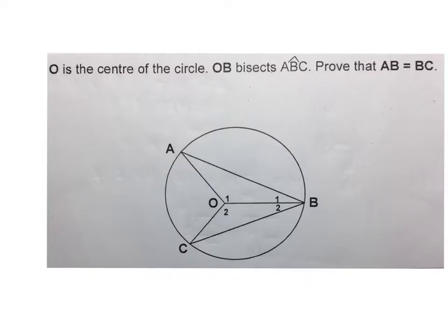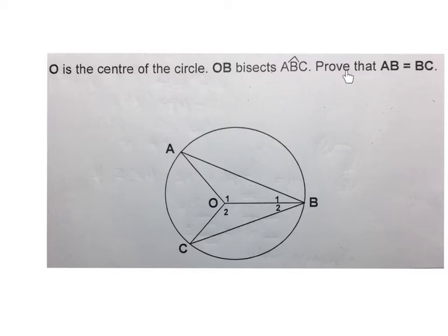The last congruency problem of this video. They say O is the center of the circle, and OB bisects angle ABC — so this line bisects this angle, which means B1 is equal to B2. Bisect means break into two equal pieces. Then they ask: prove that AB is equal to BC — we must prove that that line is equal to that line.